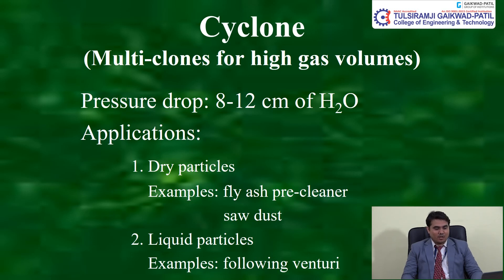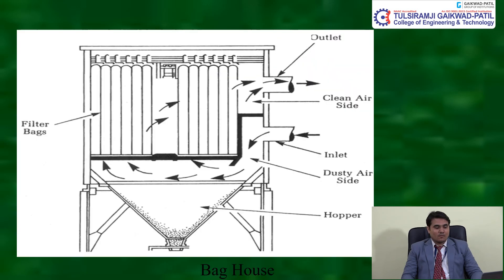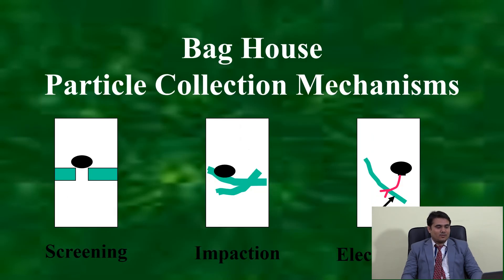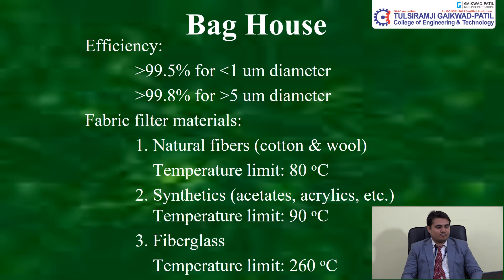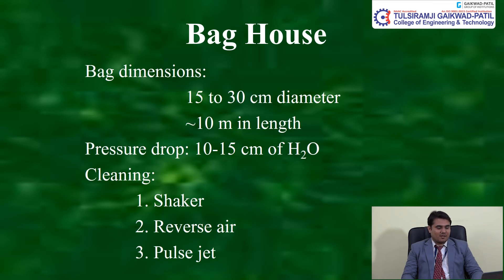In a bag house, the particle collection mechanism involves screening, impaction, and electrostatic effects. Efficiency is 99.5% for particles greater than 1 µm diameter and less than 99.8% for less than 5 µm diameter. Filter bag materials include natural fibers such as cotton and wool (temperature limit 80°C), synthetics (temperature limit 90°C), and fiberglass (temperature limit up to 260°C). Cleaning methods include shaker, reservoir, and pulse jet. Pressure drop is 10 to 15 cm H2O.